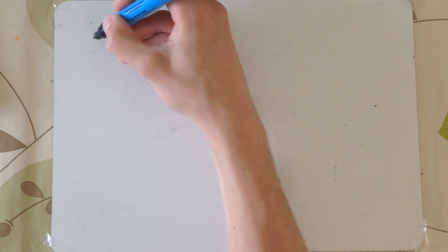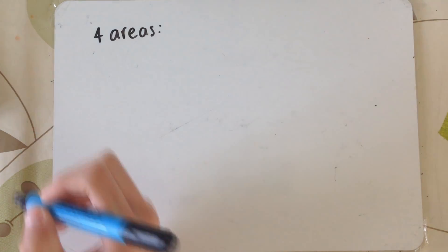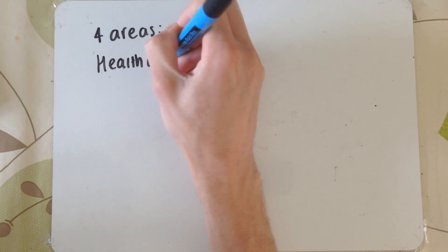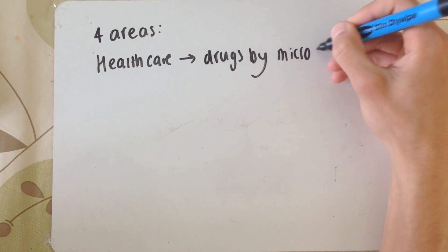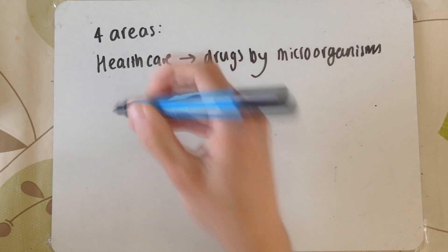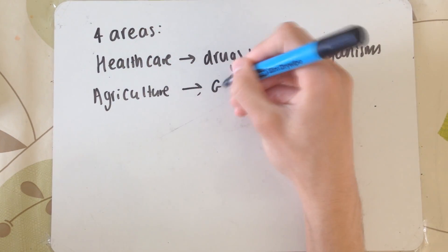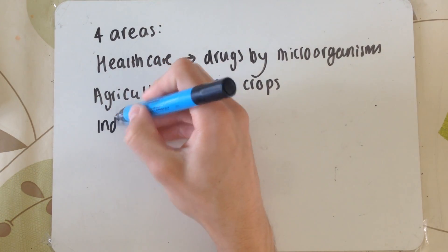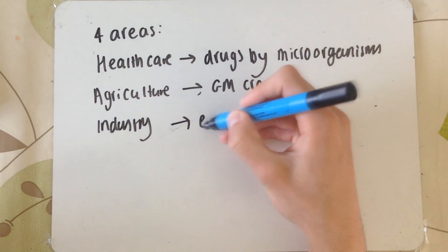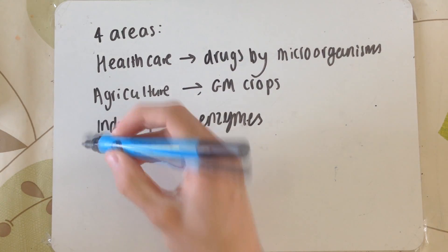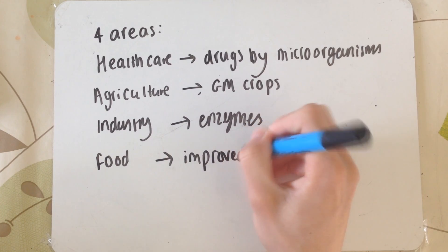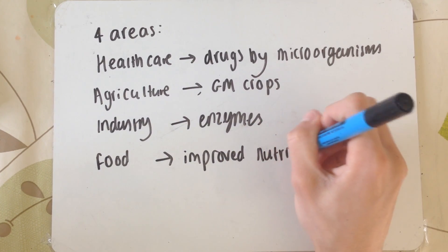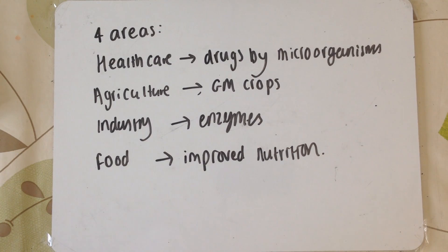There are four areas we look at. The first being healthcare — so obviously drugs like penicillin come from microorganisms. The next being agriculture: we can genetically modify crops using biotechnology to produce better flavours, greater yields, and modify them so they don't suffer from problems of disease. Then we have enzymes used in industry — they are biological catalysts that speed up reactions; we even use enzymes in our washing powders at home. And then food: improved nutrition, improved texture, flavour, and things like that.